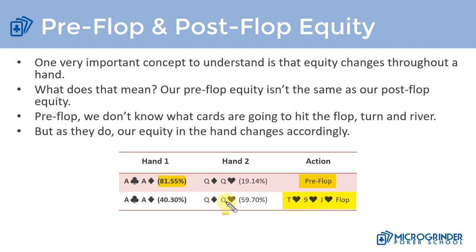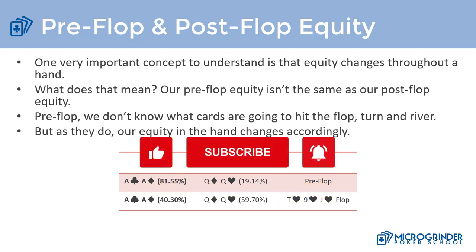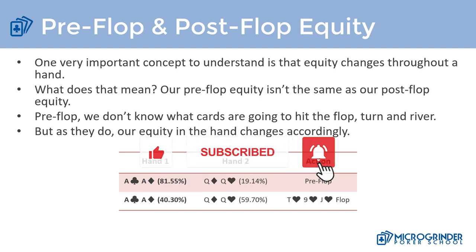But what if the flop comes 10-9-jack, all of hearts, and our opponent has the queen of hearts and we don't? The equity of pocket queens increases from 19 percent up to close to 60 percent, and our equity drastically decreases from almost 82 percent down to around 40 percent. Just because you have equity on one street doesn't mean it can't drastically change — and the further you are from the river, the more it can change. That concludes our lecture on equity and variance.